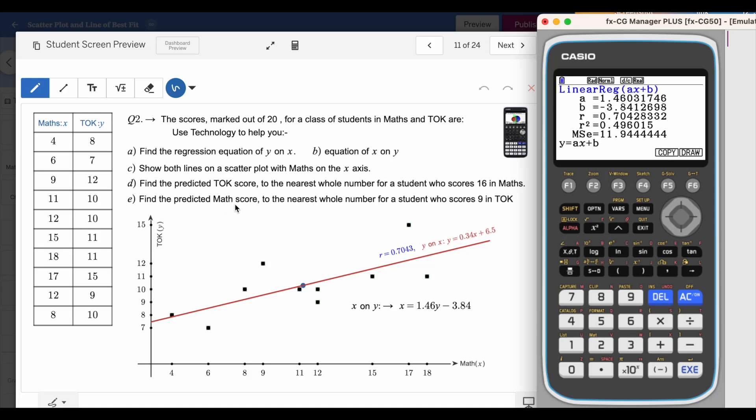Find the predicted math scores. Remember, you can only predict for dependent variable to the nearest whole number if the TOK score is 9. Now in this case, as you remember, I have entered TOK on x. Originally, it was on y but now it is on x. I can do that. Go draw. Repeat the same process. Shift G solve and calculate y for TOK as 9. TOK as 9 and here you go. The student is going to get 9.3 marks for that particular test.